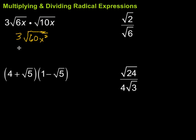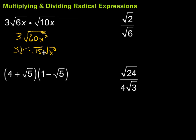So we've got 3 times the square root of 4 — because that's a perfect square factor — times the square root of 15, times the square root of x squared. I multiplied the radicands to get one square root piece, then broke it up again to allow simplification. The square root of 4 is 2, so I have 3 times 2 times the square root of 15. There are no perfect square factors of 15, so we bring that along. The square root of x squared is just x.